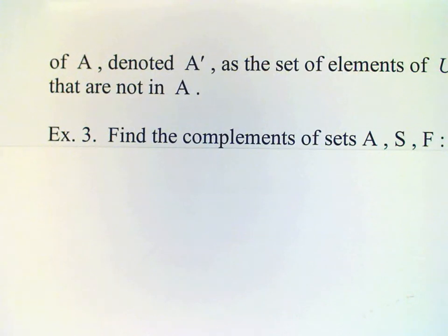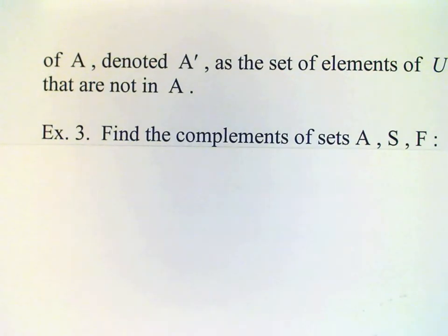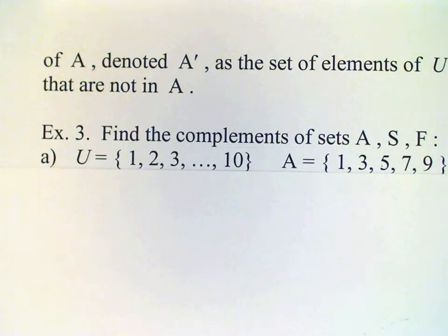Okay, let's look at three examples now to get the complements. First of all we have universal set consisting of the elements 1, 2, 3, 4, 5, 6, 7, 8, 9, 10. And A is the set consisting of the elements 1, 3, 5, 7, and 9.